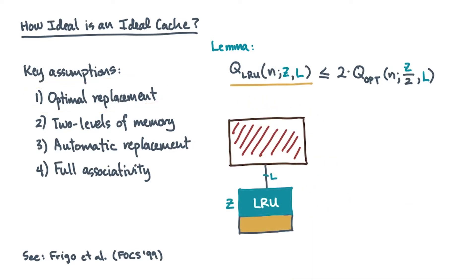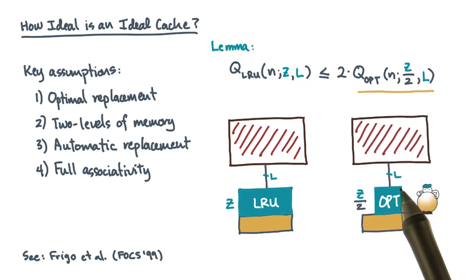Now suppose you're given a different machine. This machine has the same line size, but it only has half the cache. It also implements an optimal replacement policy rather than an LRU policy.